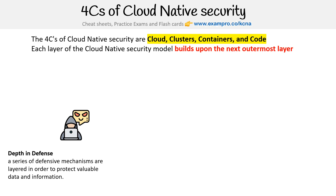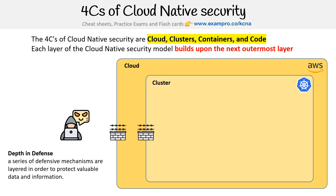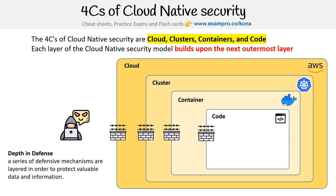The idea is that you have a malicious actor trying to reach your data. What layers are they going to go through? First, we have the cloud layer — something like AWS. Then you have your cluster layer, like Kubernetes, Mesos, or Docker Swarm. Then containers — your runtime might be ContainerD, or Docker. And then your code, and there could be your data or information at the center. Those are the four layers.